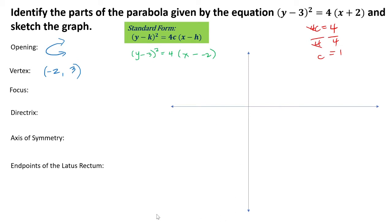Let's sketch our graph. Our vertex is at negative 2, positive 3. If our parabola is opening to the right, our focus would be to the right of our vertex by 1 unit. The focus is therefore at negative 1, positive 3.